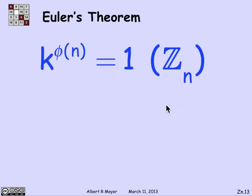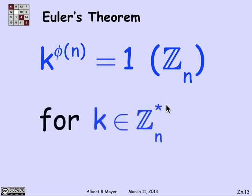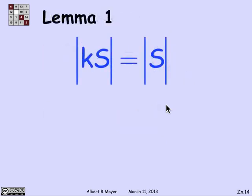Now we can restate Euler's theorem in a slightly convenient way. Instead of mentioning congruence, we can just talk about equality. Euler's theorem says that if you raise a number k to the power phi of n, it's literally equal to 1 in Z_n, at least for those k's that are relatively prime to n, that is, those k's that are in Z_n*. It's going to turn out that the proof of Euler's theorem is actually pretty easy. It just follows in a couple of steps from a couple of simple observations.